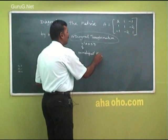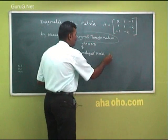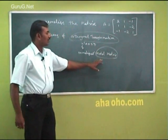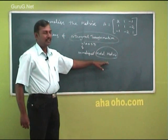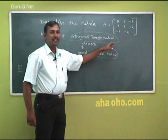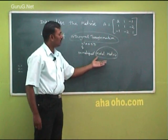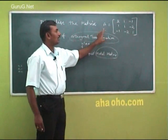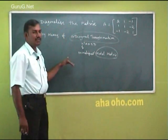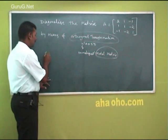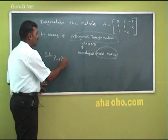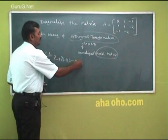What do you mean by normalized modal matrix? What is the modal matrix? The modal matrix is obtained by using the eigenvectors of a given matrix A. We will do one problem, then we can understand this. So first you have to find out the eigenvalues and eigenvectors of the given matrix. How can you find out the eigenvalues and eigenvectors? First we go for the characteristic equation: lambda cubed minus P lambda squared plus Q lambda minus R equal to 0.